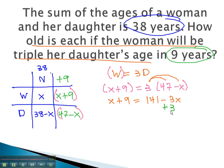Moving the variable to one side by adding 3x, 4x plus 9 equals 141. Subtracting 9 from both sides, 4x equals 132.